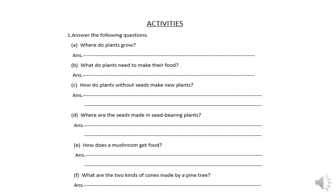Part C is: how do plants without seeds make new plants? The answer is that these types of plants have small brown spots on their leaves. Each spot has a brown powder of tiny spores. When these spores fall on the ground, they change into a new plant.